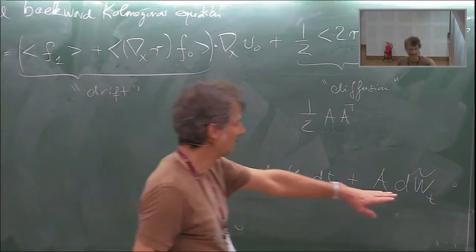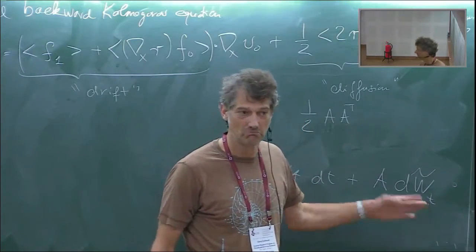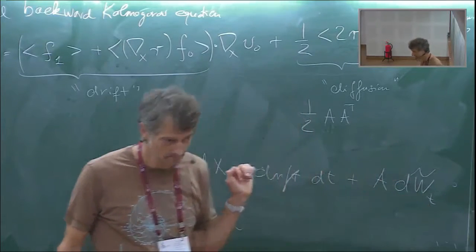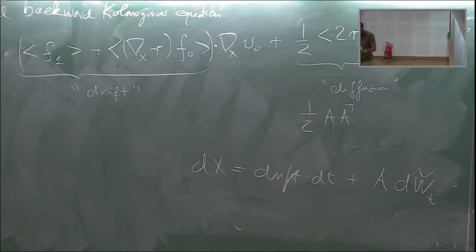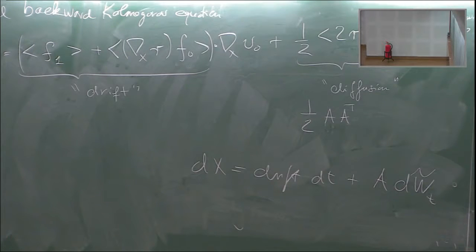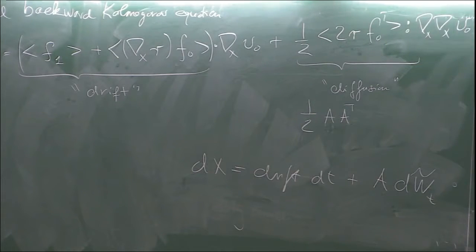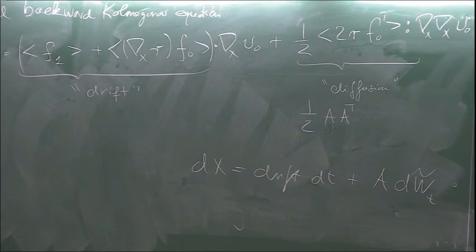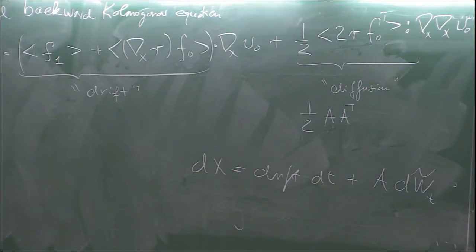The averaging result is valid on timescales of order one, not on timescales of order 1/ε. Here we are now on a timescale of order 1/ε². The reason we need that longer timescale connects to the central limit theorem: only on the 1/ε² timescale do the fast kicks have time to accumulate and produce Brownian motion in the slow variable.